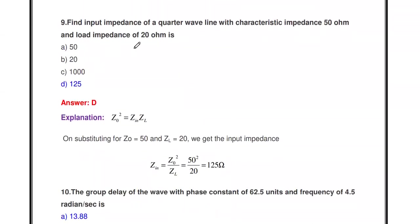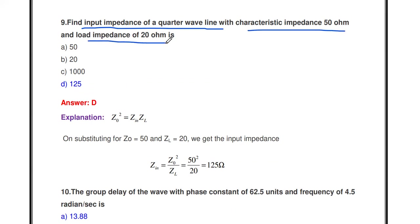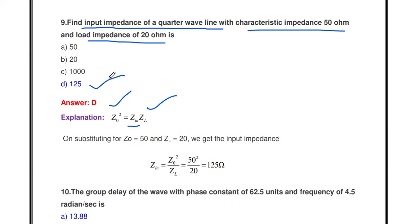Find the input impedance of a quarter wave line with characteristic impedance 50 ohms and load impedance 20 ohms. We need to find Zin. Rearranging, Zin = Z₀² / ZL = 50² / 20 = 2500 / 20 = 125 ohms. So 125 ohms is the answer.